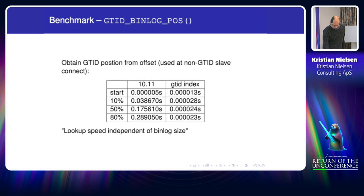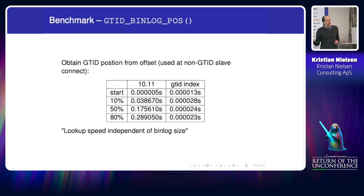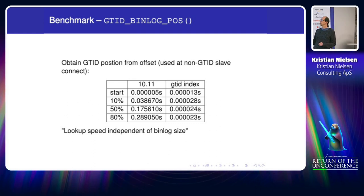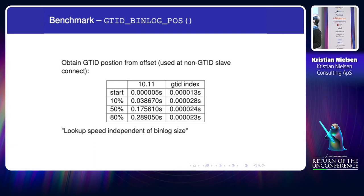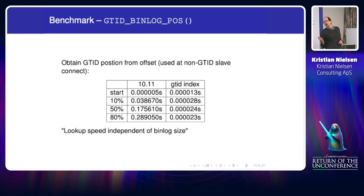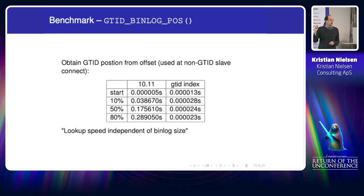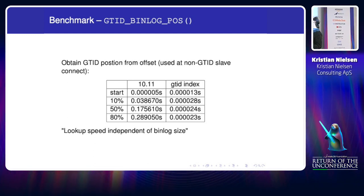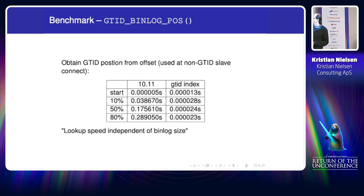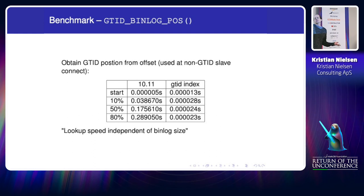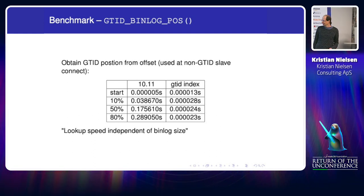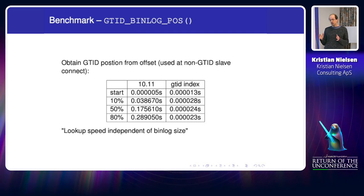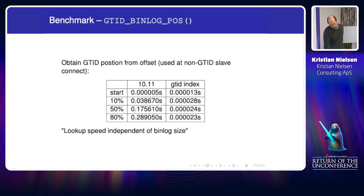Looking in the other direction — you have a position and want to find the corresponding GTID to switch to GTID-based replication — there's a function `gtid_binlog_pos` that does this lookup. You can see how dramatic it is: this only measures the lookup itself, not the slave connection overhead. It's very fast to look up in the GTID index. Of course you'd have to scan a million GTIDs the old way, but with the index it's resolved instantly.